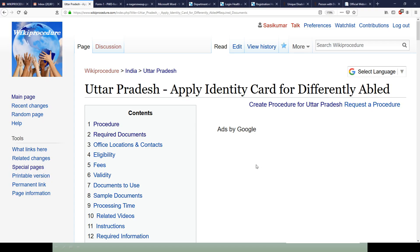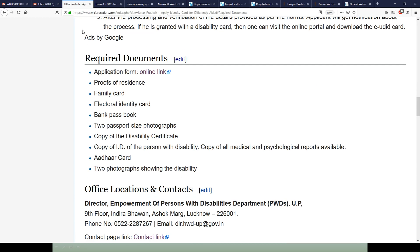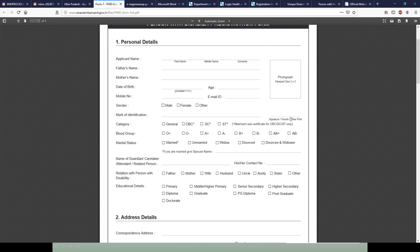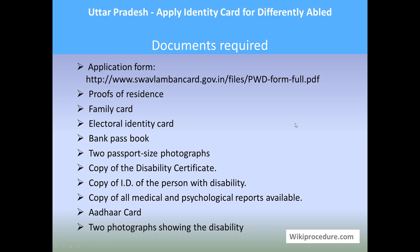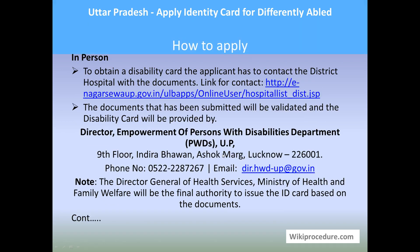Let us see the documents required. You need the application form, which can be downloaded from the link provided in the required documents section of the WikiProcedure page. Once you click that link you will get the form — download it, print it, and fill it in for applying. You also need: proof of residence, family card, electoral identity card, passport, bank passbook, two passport-size photographs, copy of the disability certificate, copy of ID of the person with disability, and copies of all medical and psychological reports available.